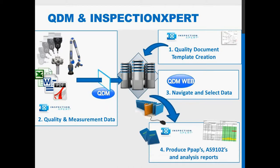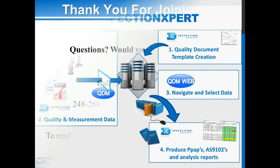Then finally, you're going to export right into Inspection Expert your populated template. We're going to do just some final touch-ups in Inspection Expert, and then produce your PPAP, AS9102, and first article inspection reports for final use. Once those are produced, you can always bring those right back into QDM and attach them onto your parts and program. So you can use QDM to organize those final reports and keep track of them historically, so you won't lose any of your documents — they'll all travel along with your parts and programs.